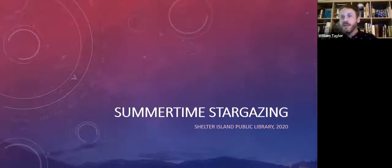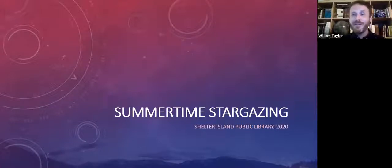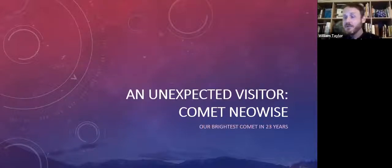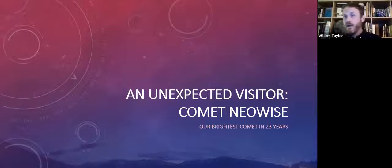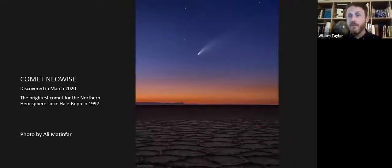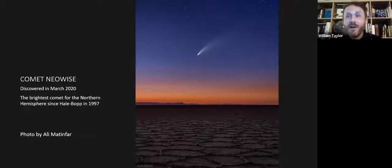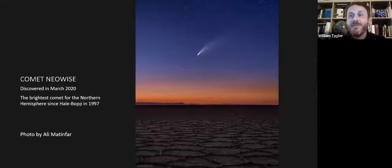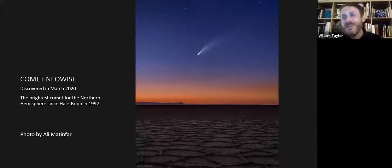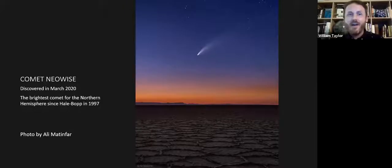The main theme tonight is summertime stargazing. One exciting development since my last talk in June is this incredible new comet called Comet NEOWISE. It was discovered in March by a satellite called NEOWISE, which orbits the Sun taking pictures and sometimes discovers new comets. For those of us in the northern hemisphere, this is the brightest comet we've seen since 1997 — some may remember Hale-Bopp. NEOWISE is not as bright as Hale-Bopp or Hyakutake, but it's still a beautiful, classical comet with a long tail.